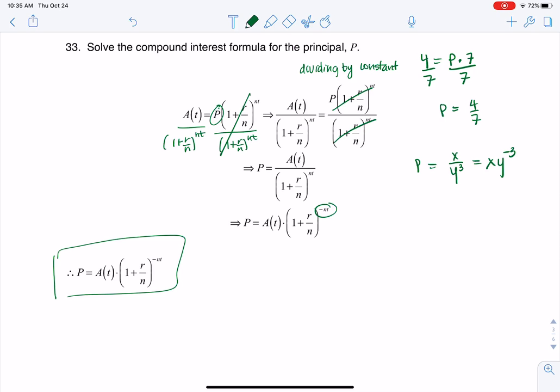So take your current amount that you have and multiply it by this constant and you will find out what your principle is equal to. All right, and that's number 33. Thanks so much. Bye.